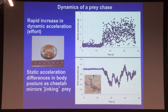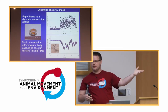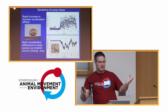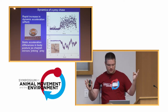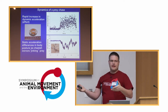Here is a track of dynamic acceleration over time. The dynamic acceleration is collected on three axes — X, Y, and Z. We smooth this data, and in the smoothed data you can really see a rapid increase in the signature as the hunt initiates.